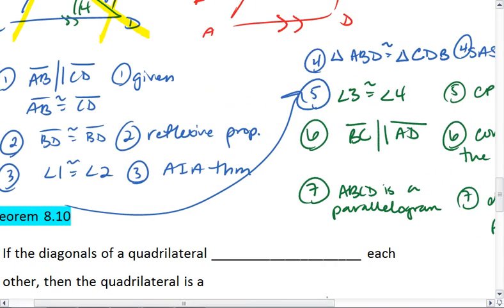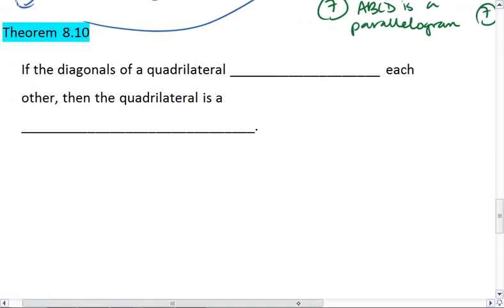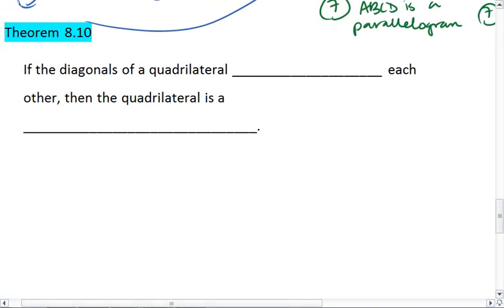Okay, last theorem. And the last theorem is this: if the diagonals of a quadrilateral bisect each other, then the quadrilateral is a parallelogram.